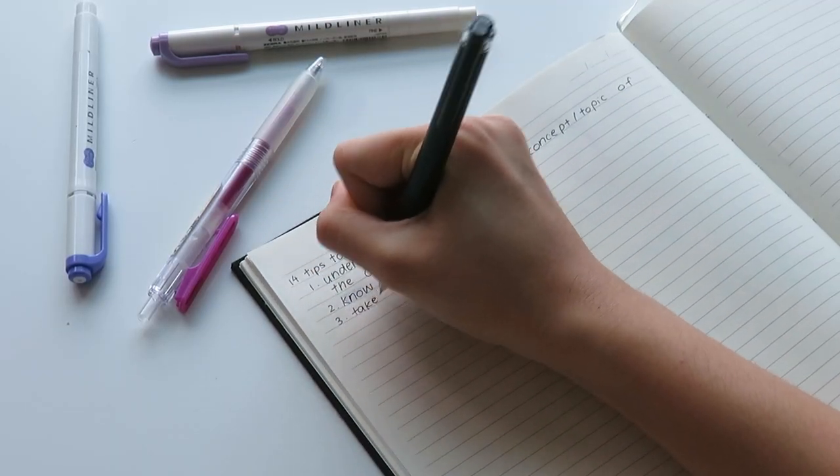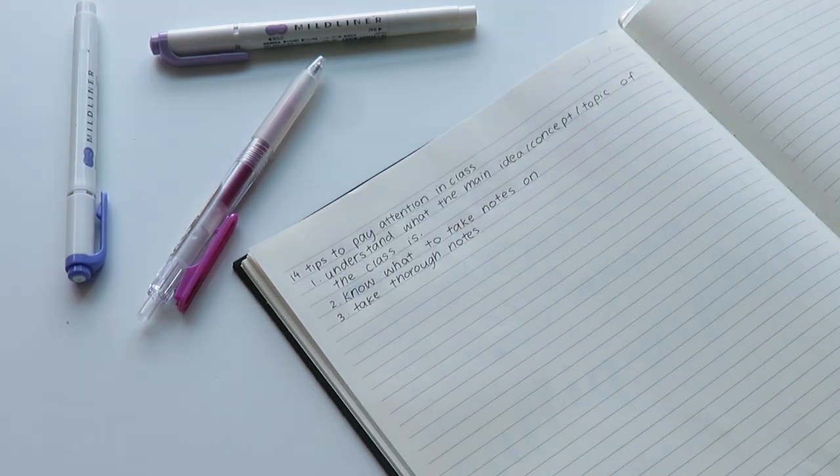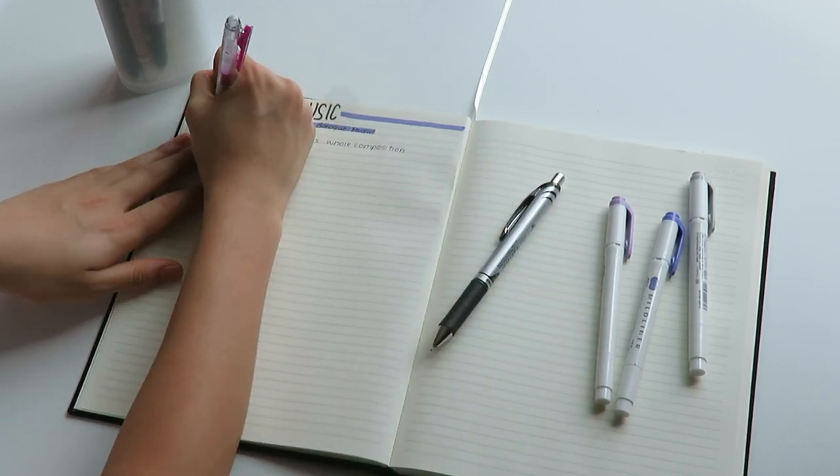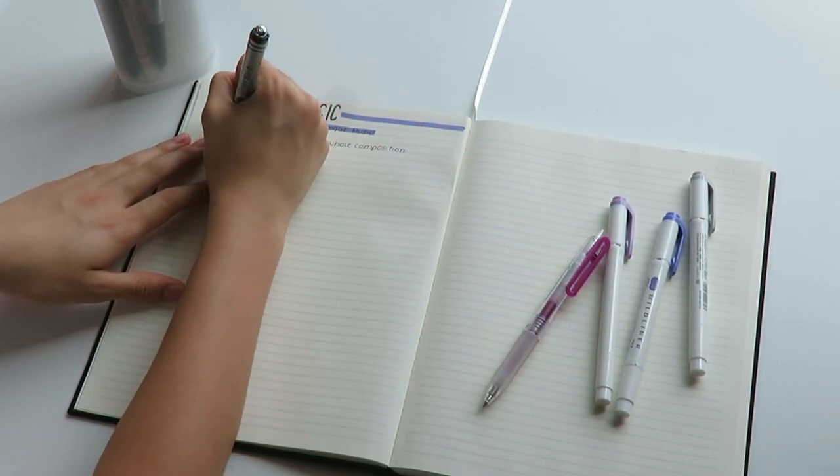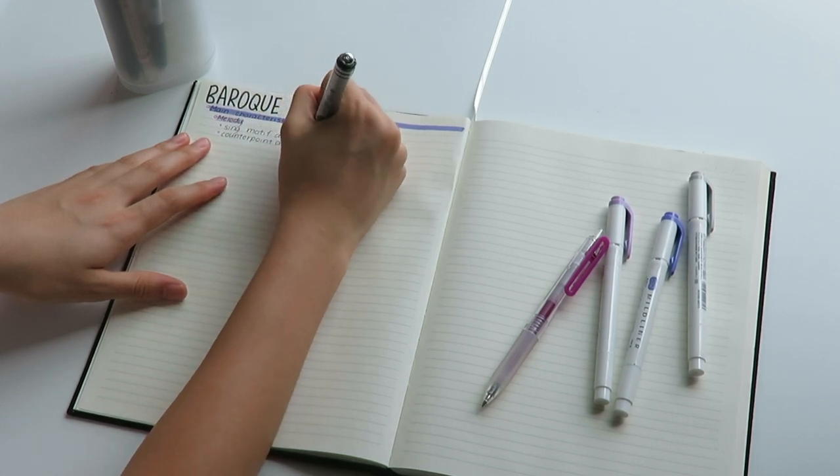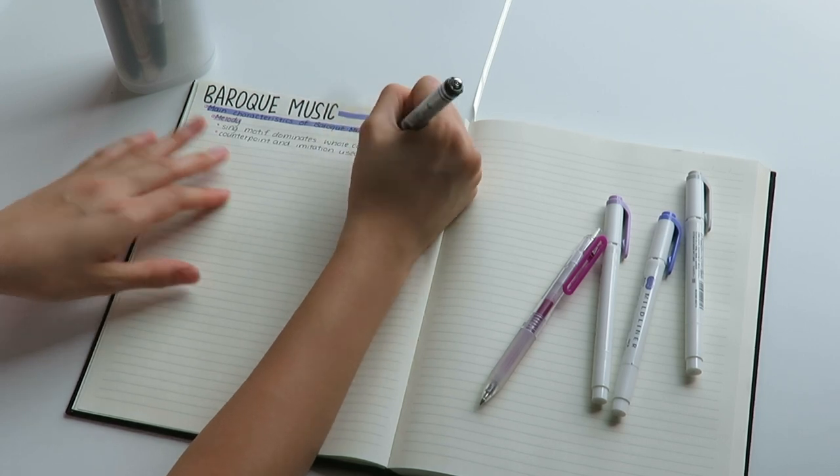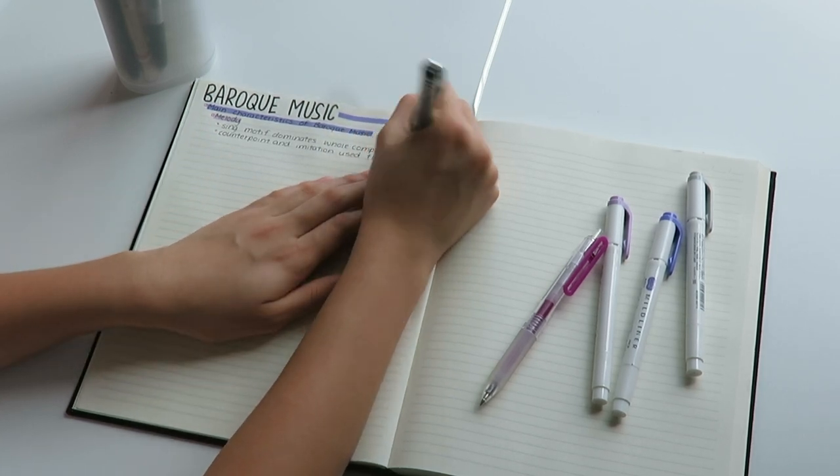The third tip is to take thorough notes. When I say thorough notes, I don't mean to take notes on every single thing that the teacher or professor is saying. I mean to take thorough meaningful notes about the key information. A great tip if you write slowly but want to take more notes is to make everything abbreviated and eliminate words such as the, a, and n.